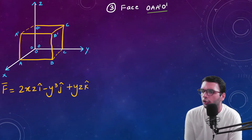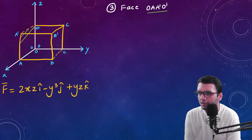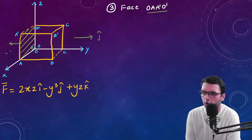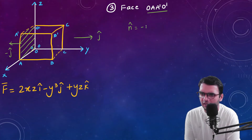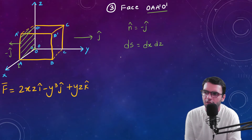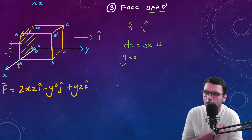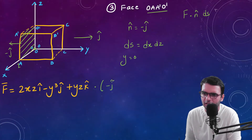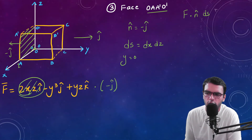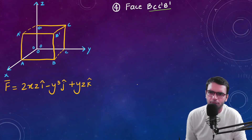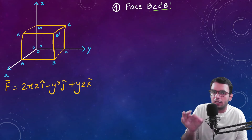Now let us consider the third face, the left side of the cube. The normal vector here is minus j-cap. The surface element is dS equals dx dz with y equals 0. Taking the dot product of F with minus j-cap, the i-cap term vanishes, and since y equals 0 the remaining term also vanishes. The contribution from this face is 0.